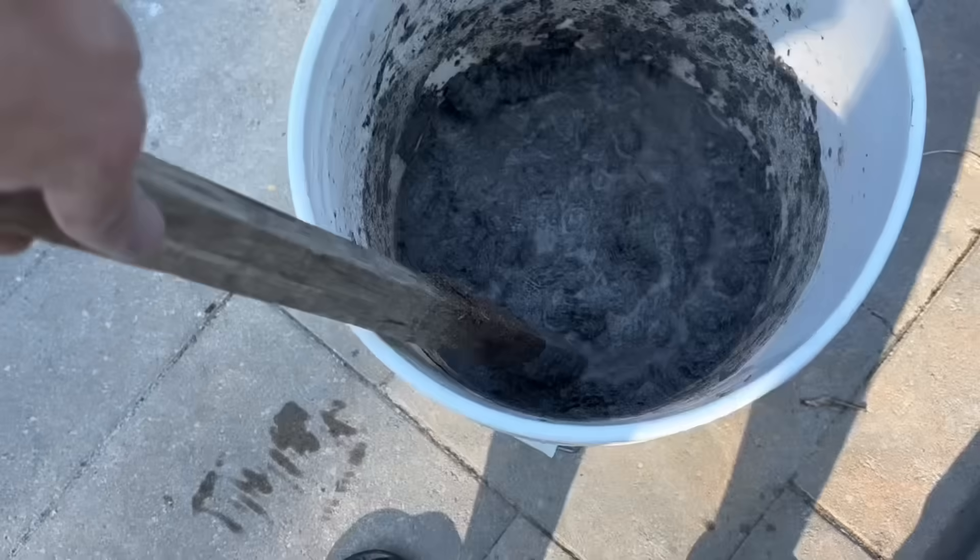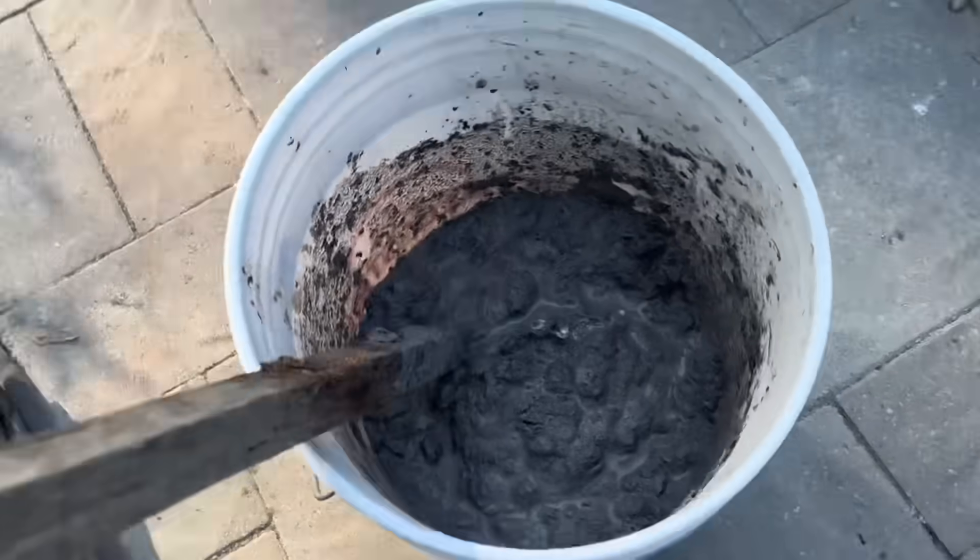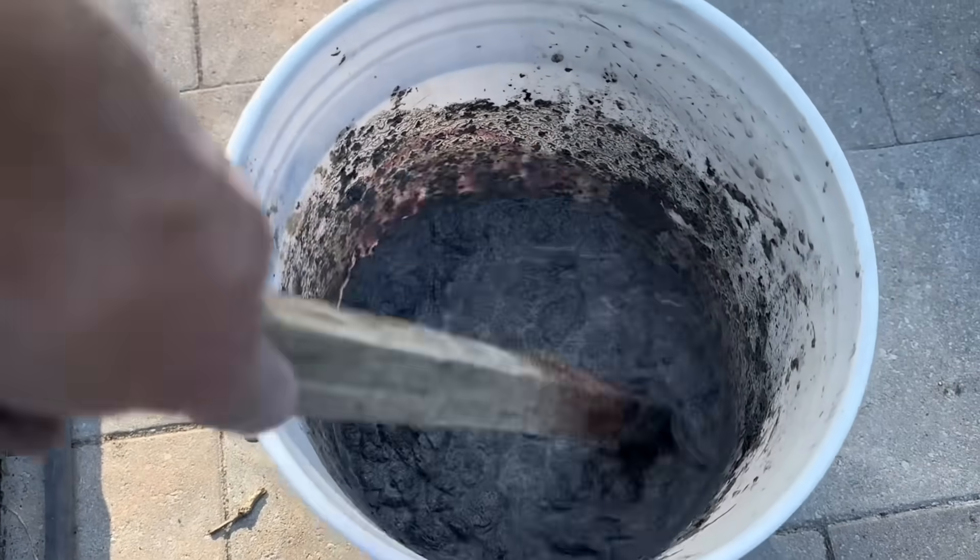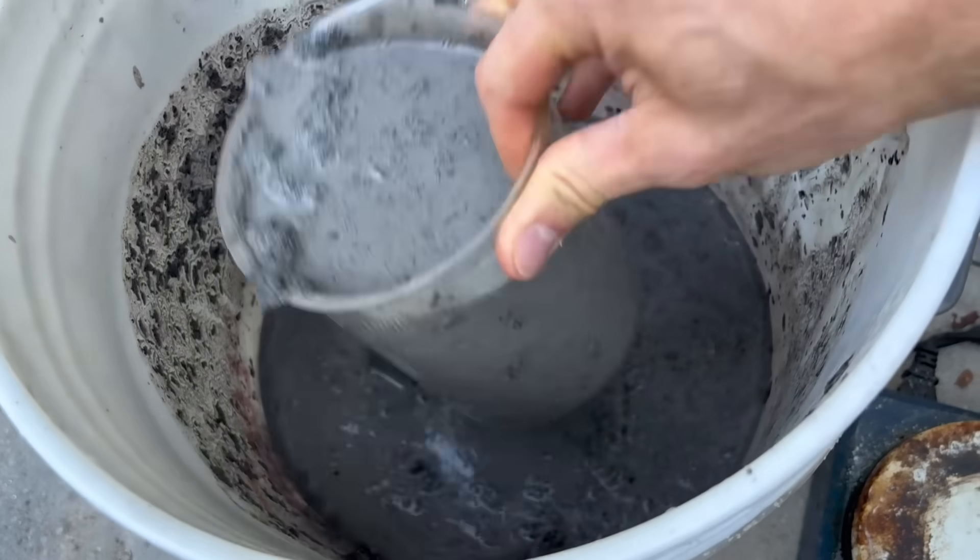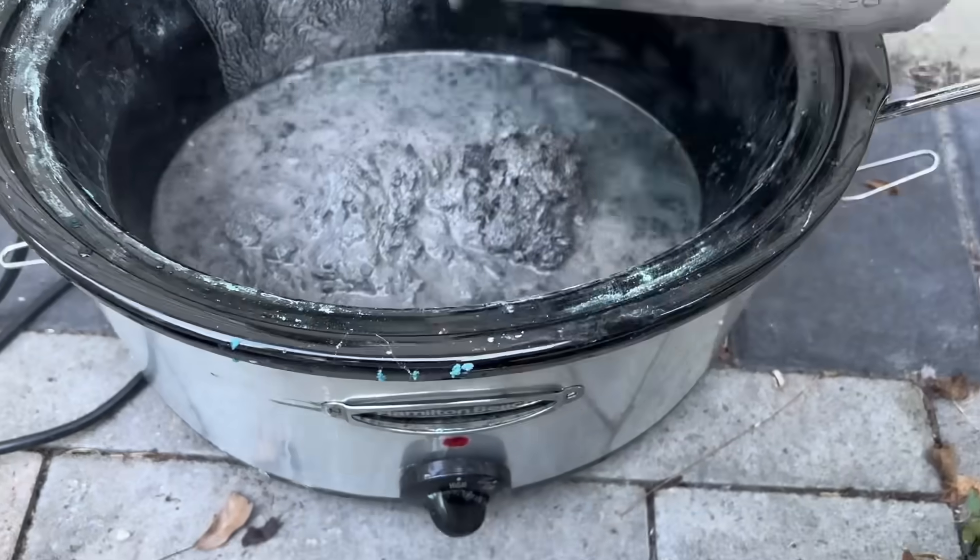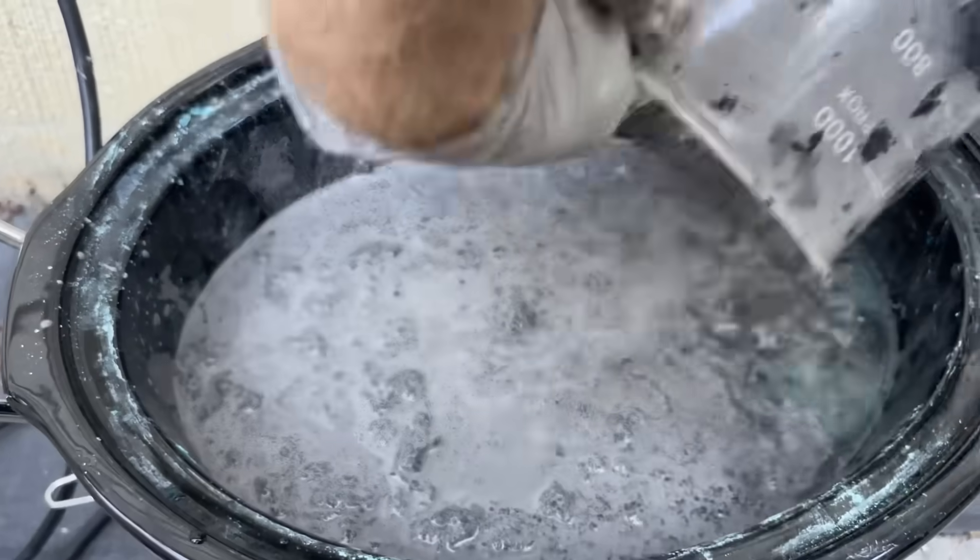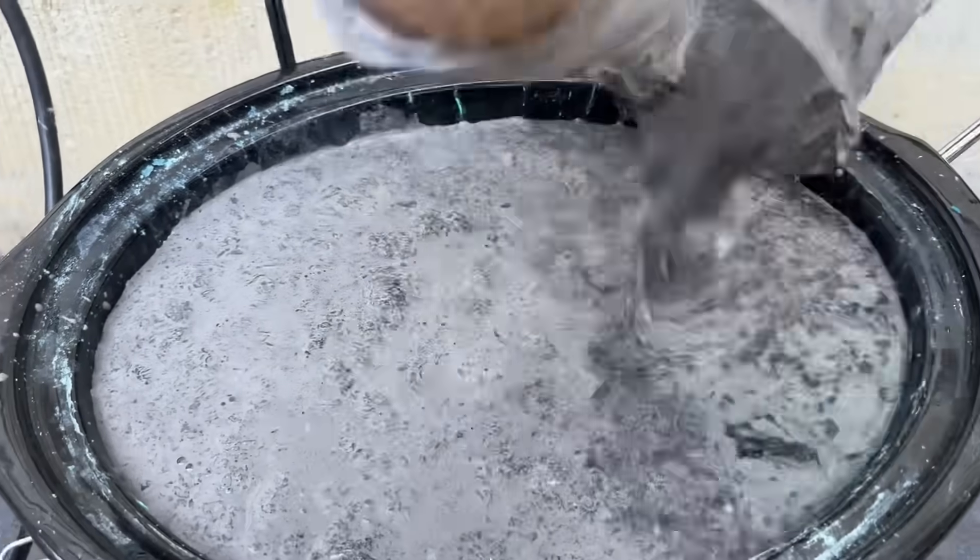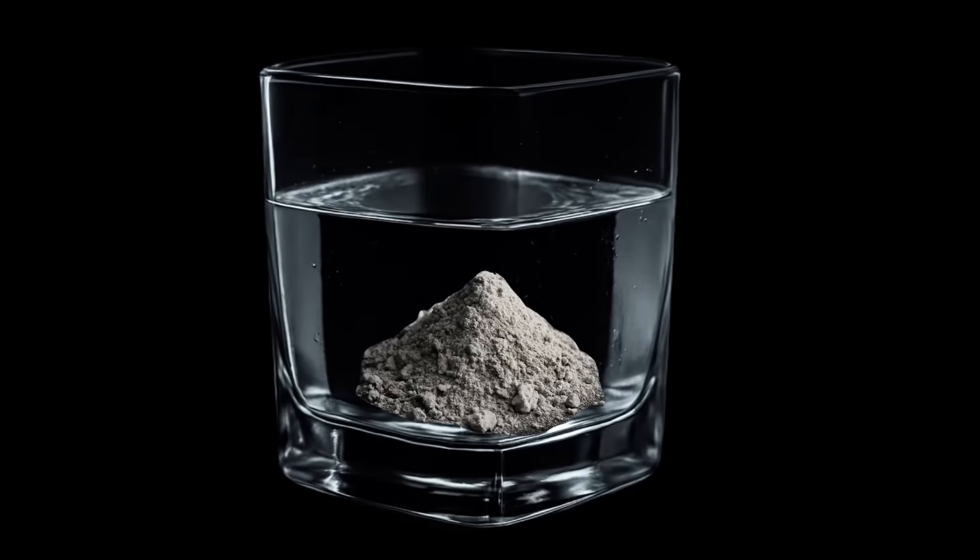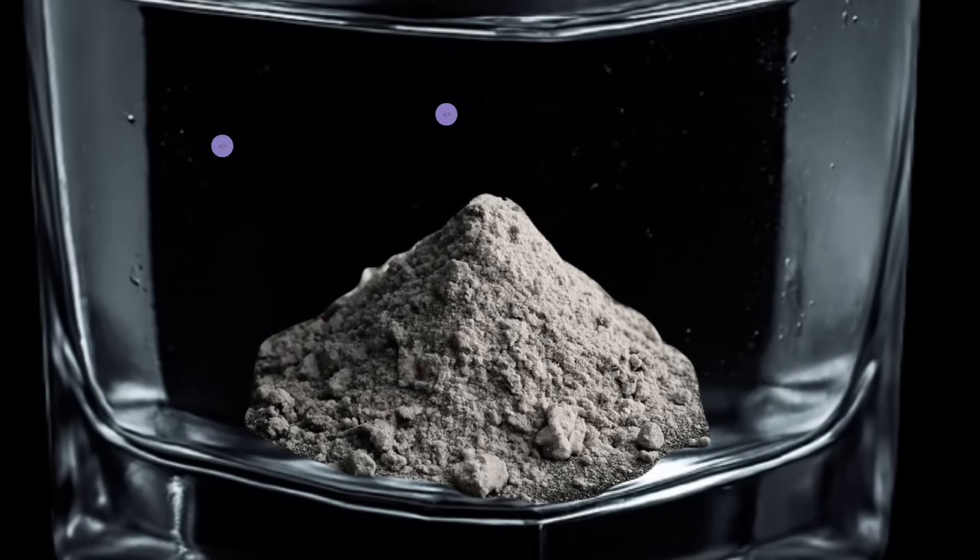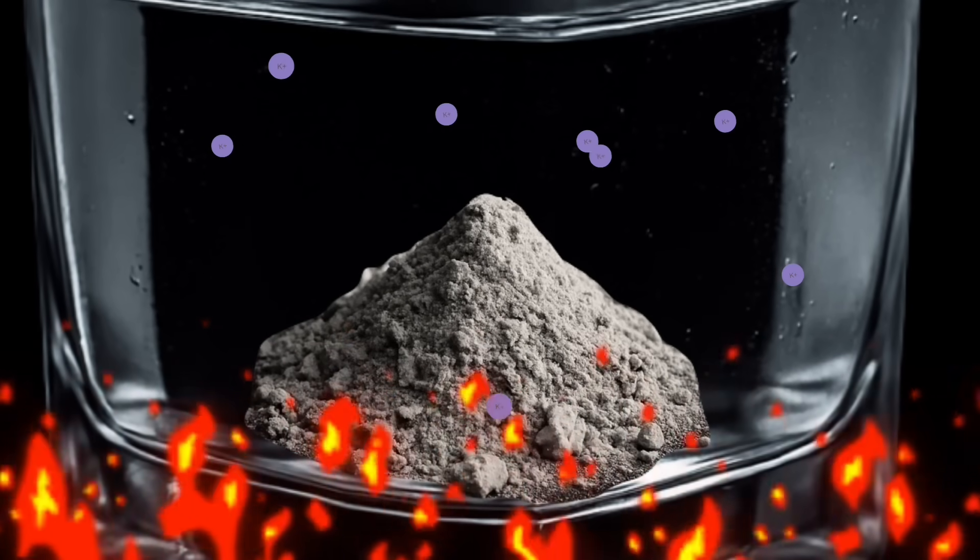So I left the homework ash to sit in a bucket of water for a few days. Then to ensure that all the water soluble compounds were leached out, I put the ash and the water into a crock pot and I cooked the ash on high for about a day. The high temperatures will increase the solubility of these compounds in water so that I can extract a greater percentage of them.